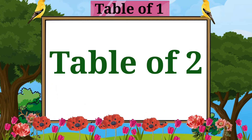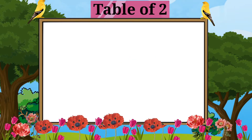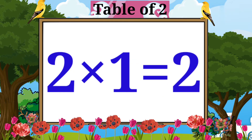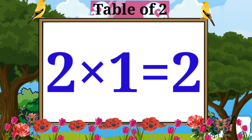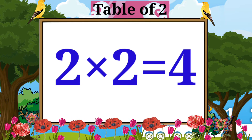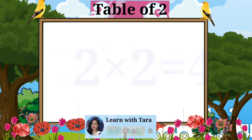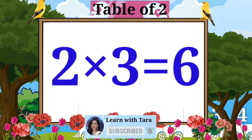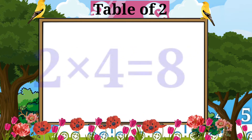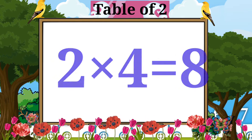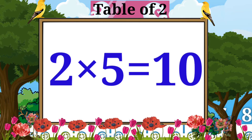Table of Two. Two ones are two. Two twos are four. Two threes are six. Two fours are eight. Two fives are ten.